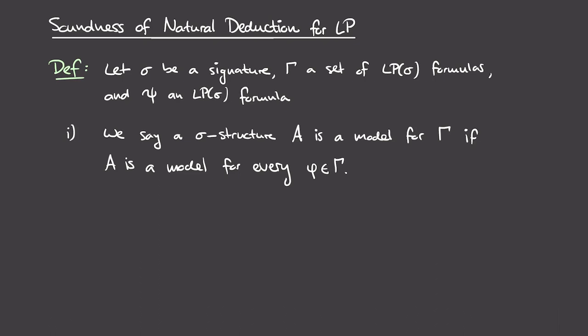Welcome. In this video we'll be discussing soundness of natural deduction for propositional logic. Essentially what this means is that if we start with true hypotheses, then a natural deduction proof will only prove true formulas. In other words, the rules we chose for the natural deduction system are truth-preserving: if we start with true formulas, those rules will produce more true formulas for us.